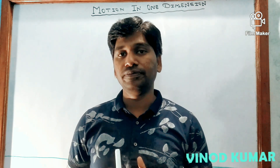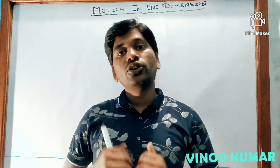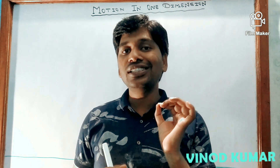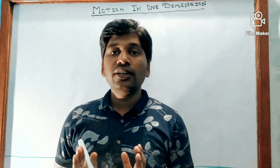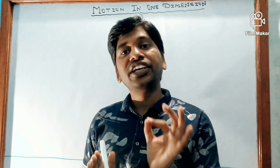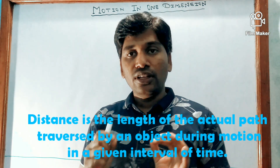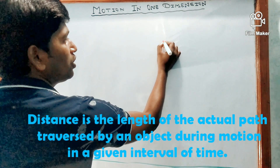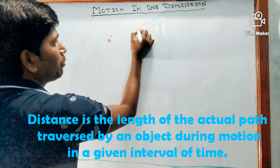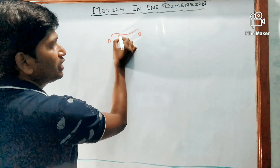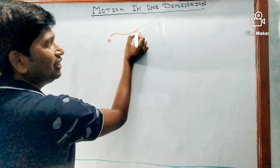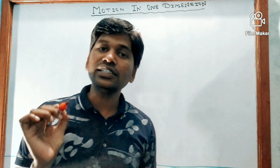Welcome students. In the second video of motion in one dimension, let us continue. Today we will start with distance. Distance is the actual path length traveled by an object in a given time interval. For example, if there is a point A and another point B, and a body starts from point A and reaches point B along a path, then the length of that path is called the distance.